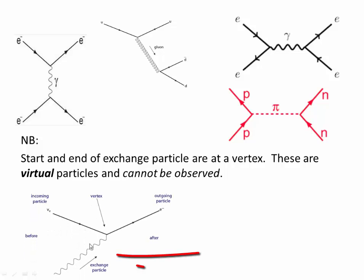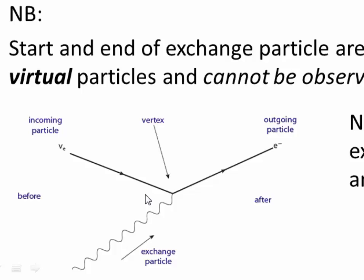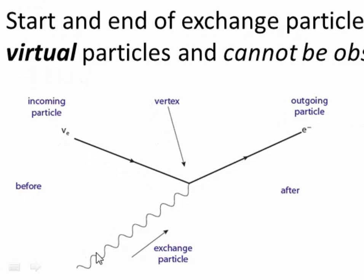This one however isn't. In this case we have a neutrino which absorbs an exchange particle which is a W minus, and that converts the neutrino into an electron.